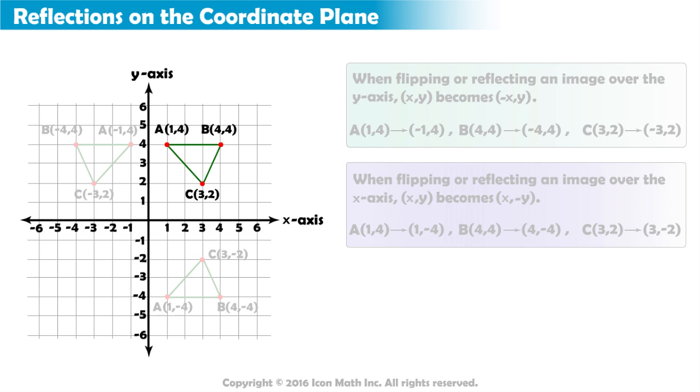Now, if we wanted to reflect the original triangle ABC over both axes, we would need to reflect twice. We've already done the first reflection over the x-axis. Now, let's perform the second reflection over the y-axis.